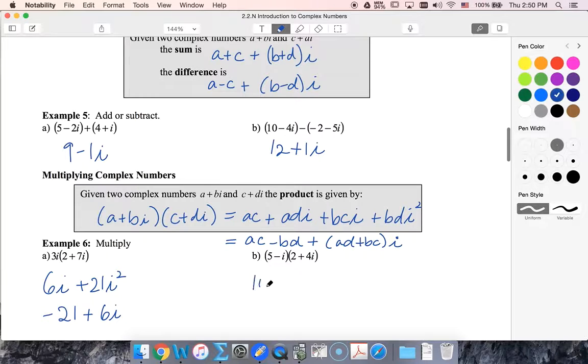Ten plus twenty i minus two i minus eight i squared, so that will be plus eight, giving us eighteen plus eighteen i.